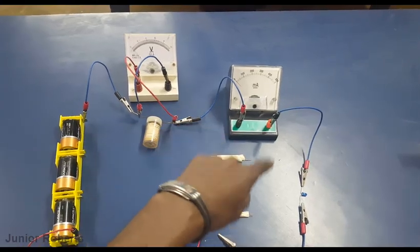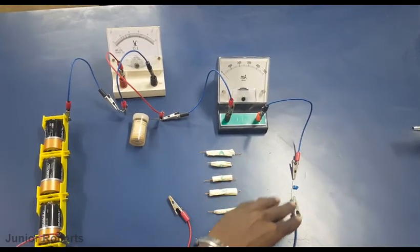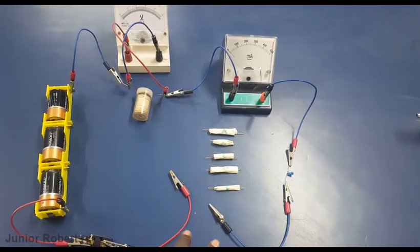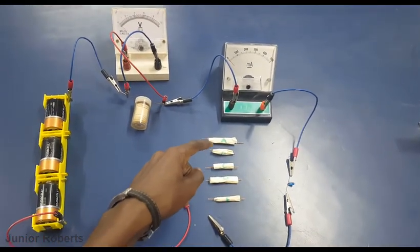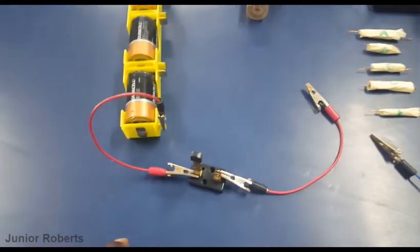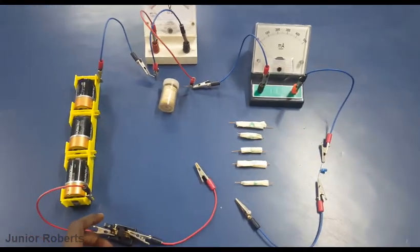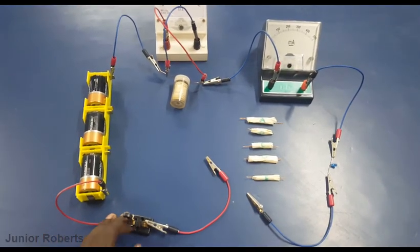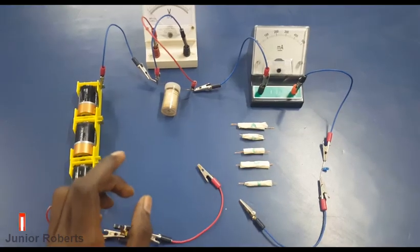And I have my empty space here which I'll be placing my components A, B, C, D, and E. And I have my switch here. So in order to connect the component, I must ensure that the switch is open. So here my switch is open, so I will now connect component A and close the switch and observe what happens to the LED.